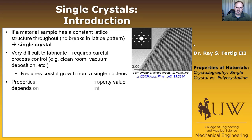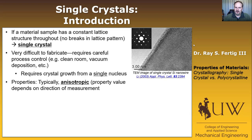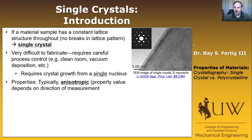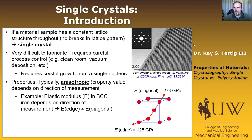In a single crystal, properties are typically what we call anisotropic. That means the property value is dependent on the direction that we measure. Here's an example to illustrate that — let's think about the elastic modulus in BCC iron.